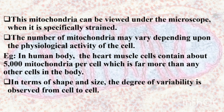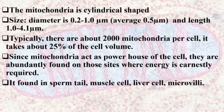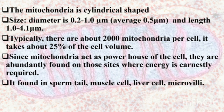In terms of shape and size, the degree of variability is observed from cell to cell. The mitochondria is cylindrical shaped. In terms of size, the diameter is 0.2 to 1 micrometer, the average size is 0.5 micrometer, and the length is 1 to 4 micrometers. Typically, there are about 2000 mitochondria per cell.